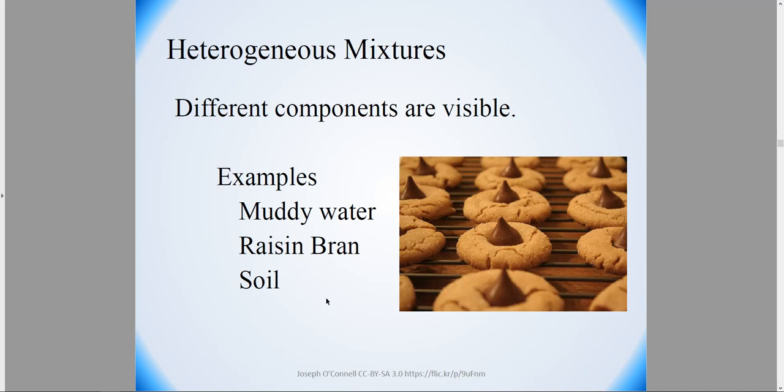Heterogeneous mixtures, on the other hand, have visible components. So for example, you can see a cookie here. You can clearly see the Hershey's Kiss and the cookie part. So this is an example of a heterogeneous mixture. Muddy water, you can clearly see the mud and the water, or sandy water is probably a better example because it's easier to visually distinguish them. Raisin bran, which has raisin and flakes and this kind of stuff, and soil, which has rocks and a non-uniform composition.